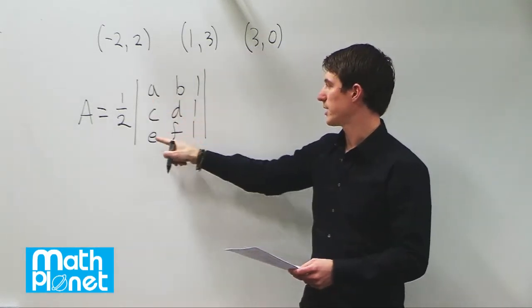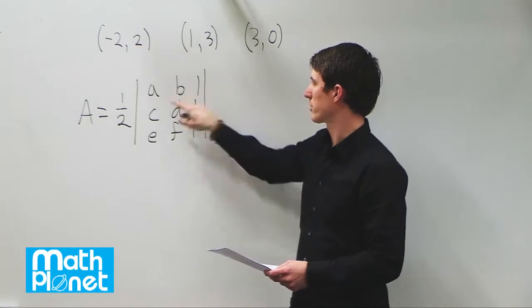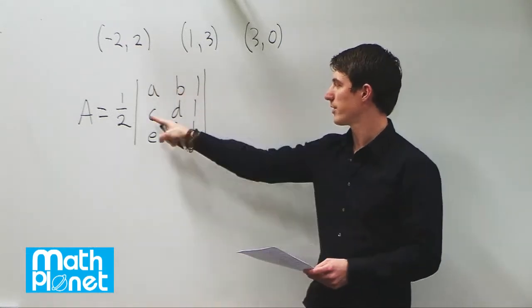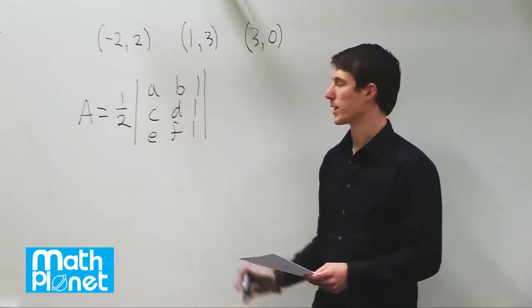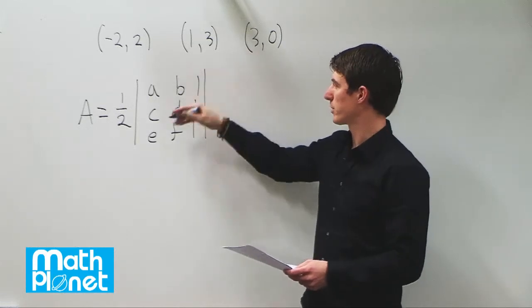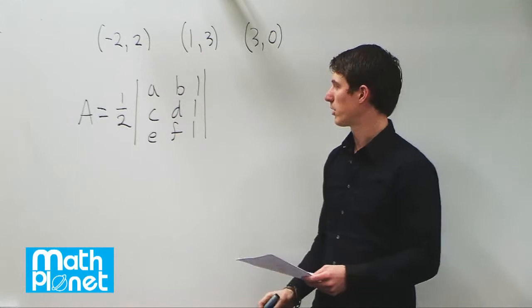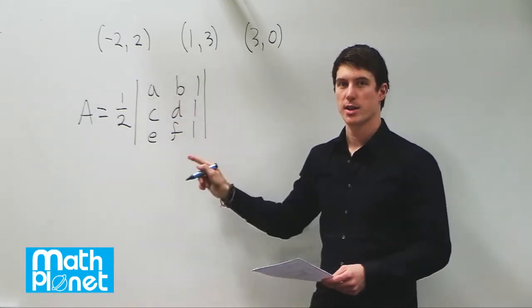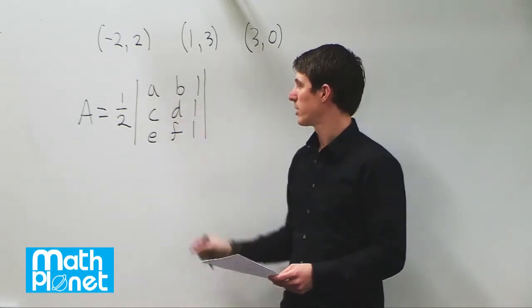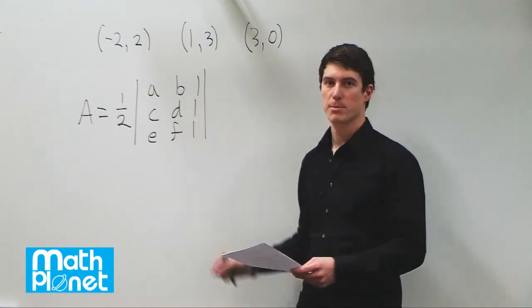These a and b, c and d, and e and f correspond to these ordered pairs. This is the first point, this is the second point, this is the third point. It doesn't really matter which order you put the points in, just as long as you use the rows as the individual points, not the columns.